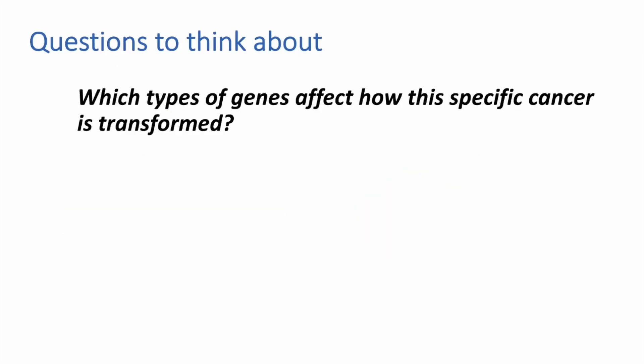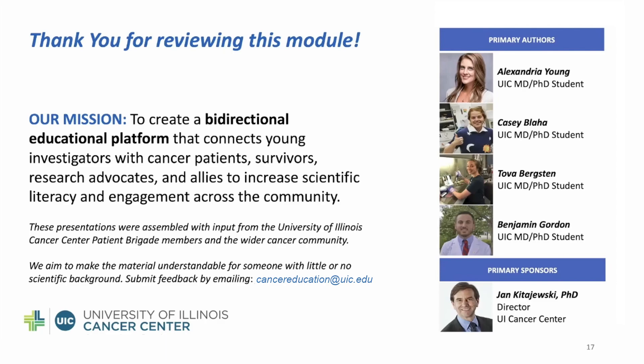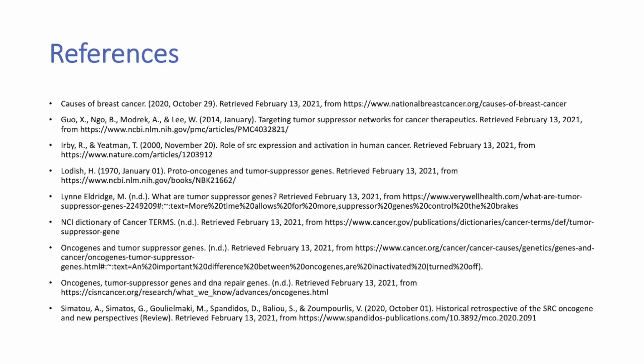Thank you for taking the time to understand the concepts of how tumor suppressors and oncogenes work. Now we'd like to go through some questions you can think of when you come across scientific literature on cancer genes and mutations. For instance, what type of genes are important in the development of breast, colon, or ovarian cancer? How might this affect genetic testing or the treatment plan for that specific cancer? Thank you for reviewing Module 4. We'd also like to thank all of those involved in the creation of these videos, including the UICC and its patient brigade, for providing feedback in shaping the direction of these modules. We invite you to reach out to us if you have any questions or feedback you'd like to share.